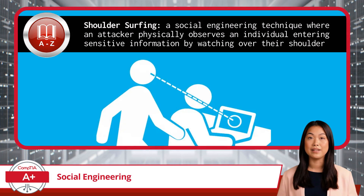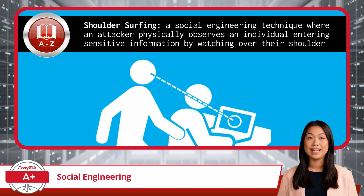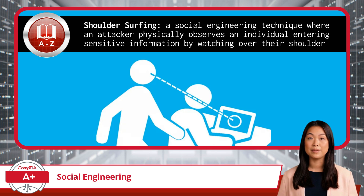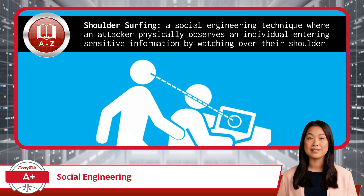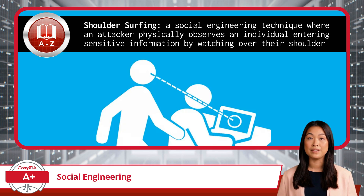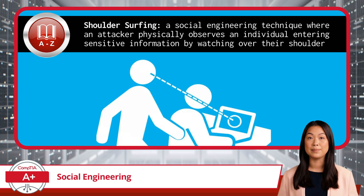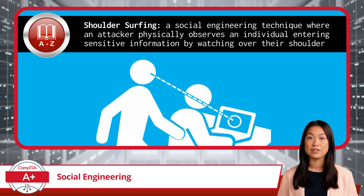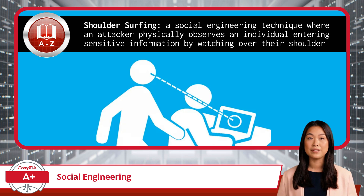Speaking of sneaky, you'll want to keep an eye out for shoulder surfing too. Shoulder surfing is a social engineering technique where an attacker physically observes an individual inputting sensitive information, such as a password or PIN, by watching over their shoulder. This attack typically occurs in public or crowded spaces, like at ATMs or while using mobile devices in public — pretty much anywhere an attacker can easily see the information being input without the victim's knowledge. Ever catch someone glancing over your shoulder while you're typing in your password? If so, then perhaps you have been the victim of shoulder surfing.